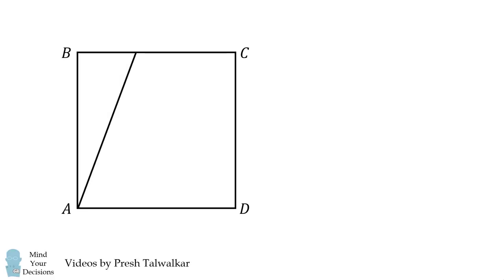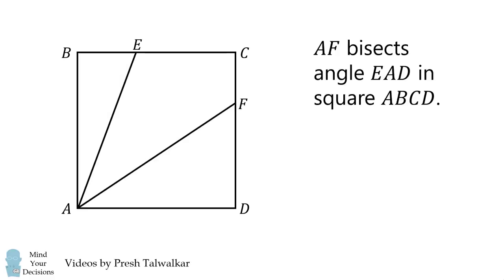Mind your decisions, I'm Presh Talwalkar. In square ABCD, construct AE and AF as shown, so that AF bisects angle EAD. If BE is equal to 36 and FD is equal to 64, solve for the length of AE.